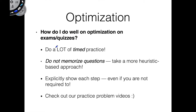The first thing you want to do is a lot of timed practice. Optimization problems involve real-world scenarios, so there are a lot of different kinds of examples that can be thrown at you. You want to do as much practice as you can to familiarize yourself with a lot of the subtleties that emerge from each kind of problem. Equally important, if not more, is doing timed practice.